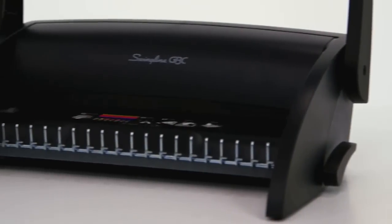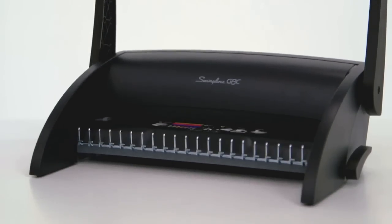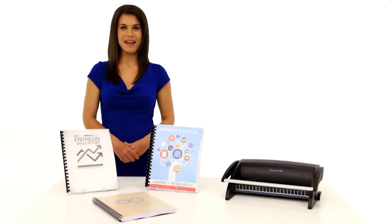It's that easy! The comb-bind C12 binding machine creates both letter and oversized bound documents. Plus, it comes with a 1-year warranty. Purchase your comb-bind C12 binding machine today!